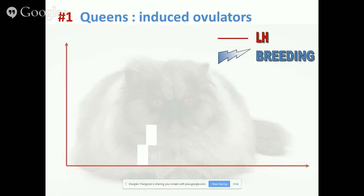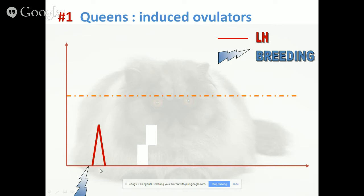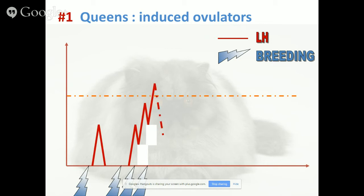One of the triggering factors is a hormone called LH — luteinizing hormone — which is produced in the brain of the animals. This secretion of LH is triggered by breeding, by the matings. In cats, there is a threshold of LH the queen needs to produce to induce ovulation. When you have only one breeding, there is an increase in LH secretion, because receptors in the vagina of the queen transmit information to the brain, leading to LH secretion. But one breeding is usually not enough to reach the threshold for ovulation. We need to observe at least three breedings to reach this threshold and induce ovulation.